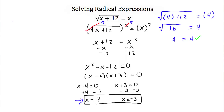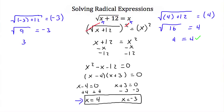Next, plugging in x = negative 3: the square root of negative 3 plus 12 should equal negative 3. Negative 3 plus 12 is 9, so we have the square root of 9 equals negative 3. The square root of 9 is positive 3, so we get positive 3 equals negative 3 — that doesn't make sense. This means x = negative 3 is an extraneous solution, created when we squared both sides but not actually valid for the original equation. The only real solution is x = 4.